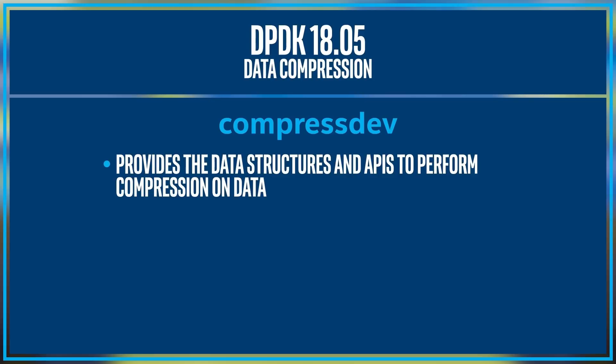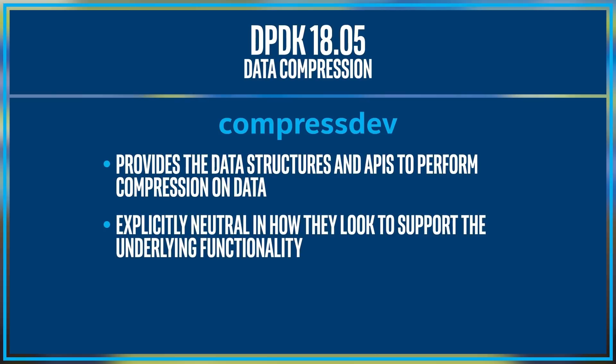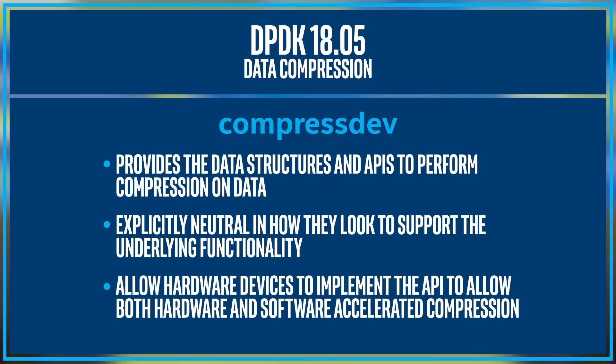In line with how the API sets are designed, the CompressDev APIs are explicitly neutral in how they look to support the underlying functionality. They allow hardware devices to implement the API to support both hardware and software accelerated compression. Additionally, Intel-optimized code from the Intel Intelligence Storage Acceleration Library project will be available as part of the 1805 release, with other hardware and software drivers expected as part of the 1808 and subsequent releases.